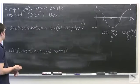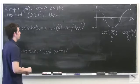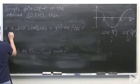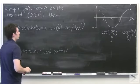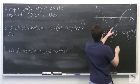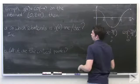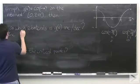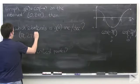So on which subintervals is g of x increasing or decreasing? We'll start with increasing. Looking at the graph, you can see that from pi to 2 pi, it looks like it's increasing. So pi to 2 pi, it's increasing.